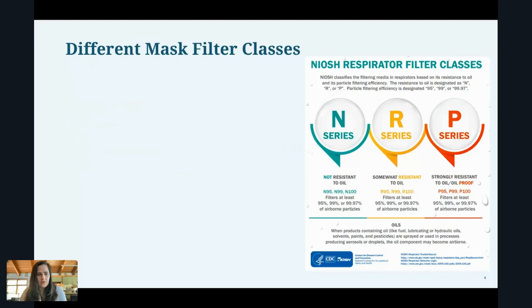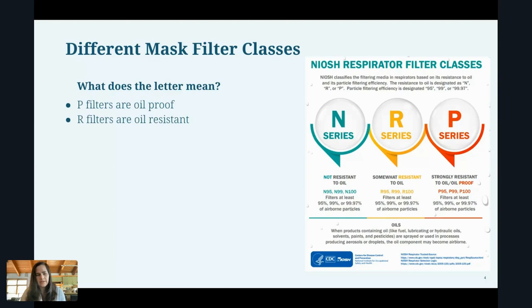So what are the different mask filter classes? What does the letter mean? You may have seen masks where the main letters you'd see in front of them — like an N95, an R99, or a P100. The letter P means the filter is oil proof. R means it's oil resistant, and N filters are not resistant to oil at all.